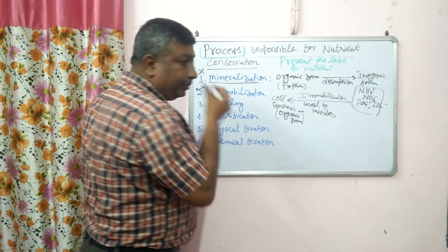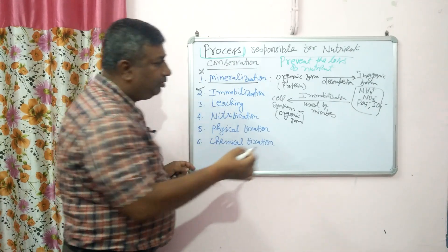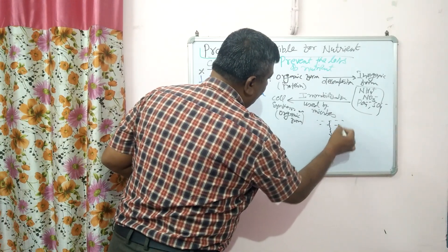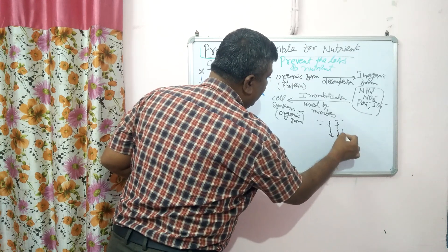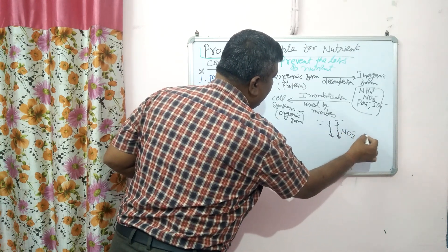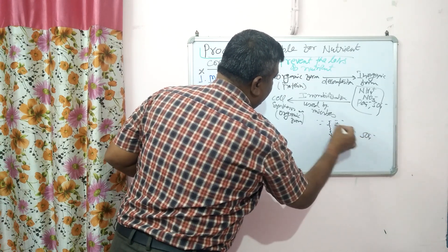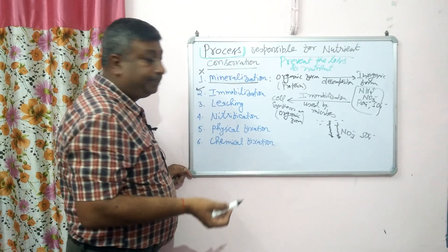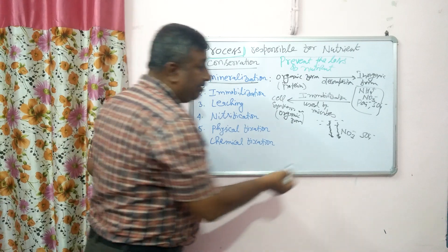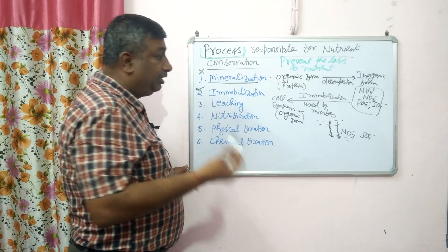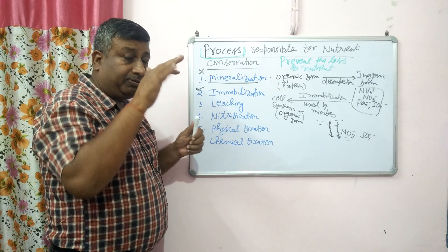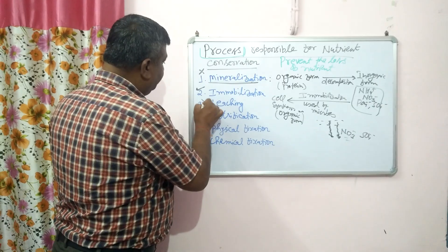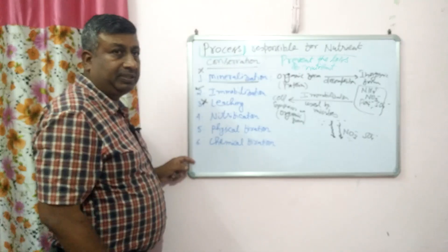Now, in the case of leaching, nutrients move downward through the soil with percolating water. Particularly anions such as nitrate and sulfate move with the percolating water — this process is known as leaching. Leaching is very common for nitrate, so nitrogen is lost by the leaching process. Therefore, leaching is not responsible for nutrient conservation.